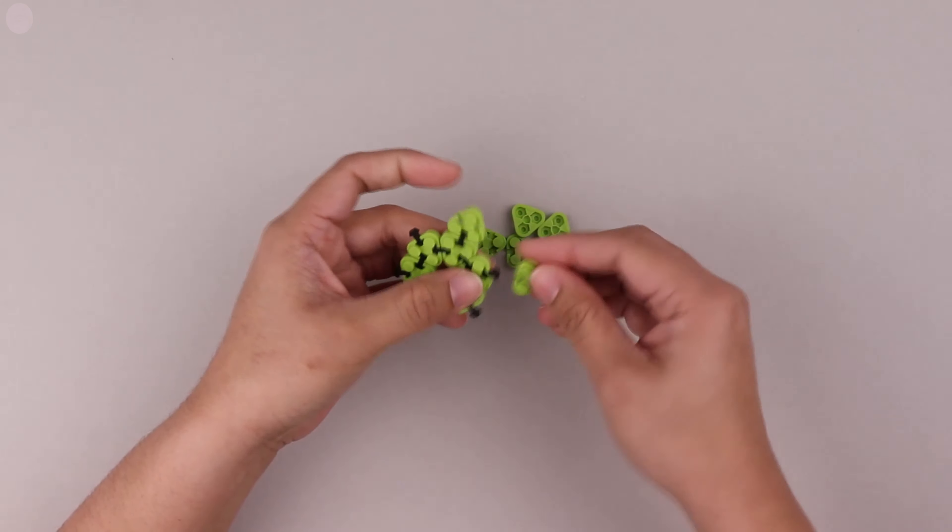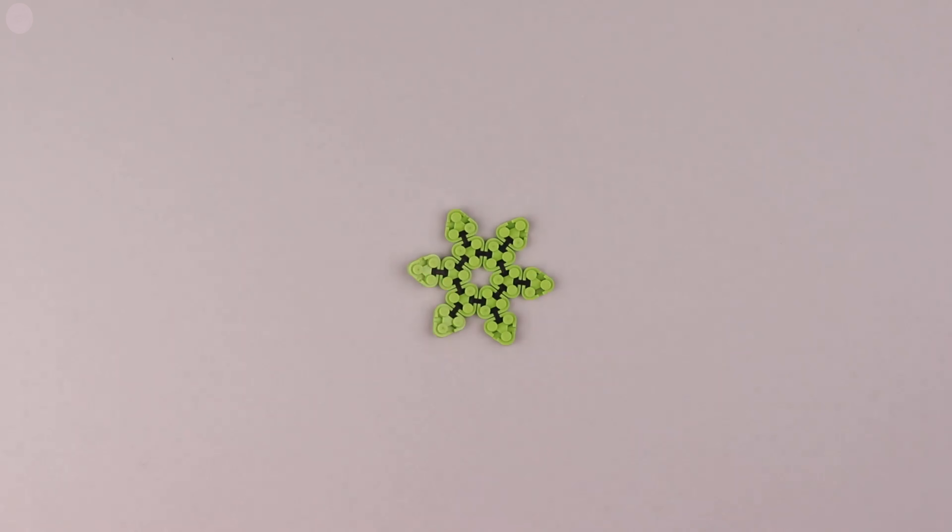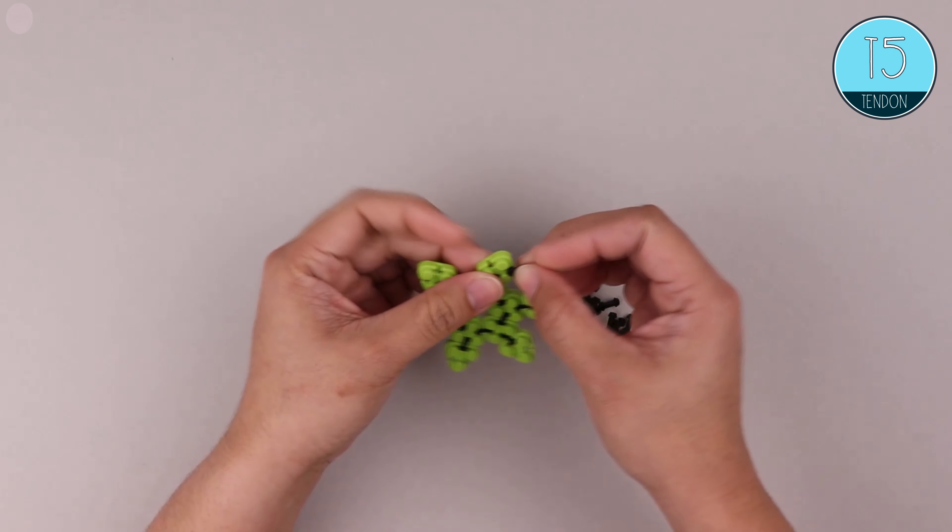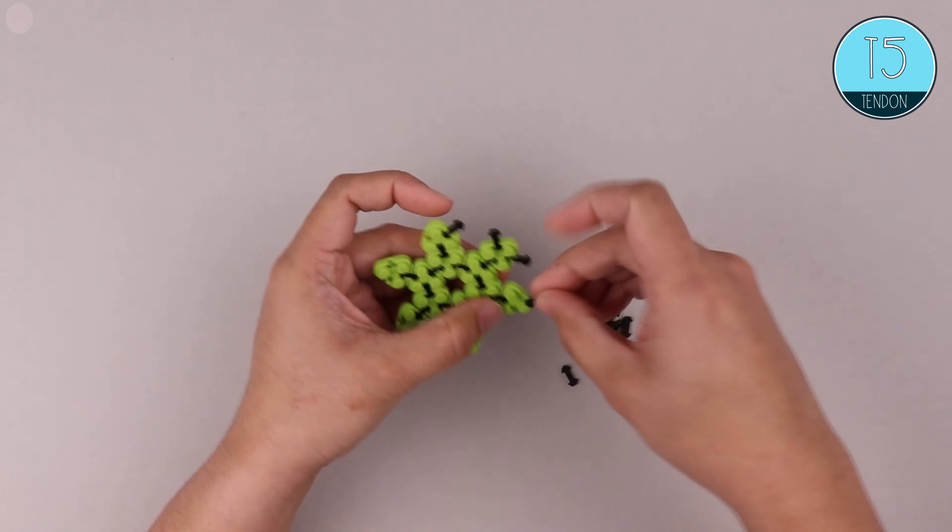So we've essentially fashioned ourselves a six point star, or maybe a ninja star. But no ninja stars today. We're going to carry on now with T5 tendons and we add one to every exposed edge of the triangles that we've just inserted.